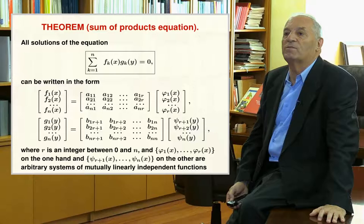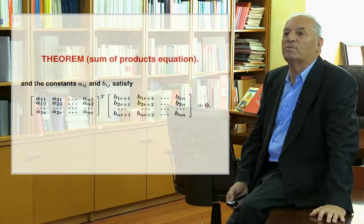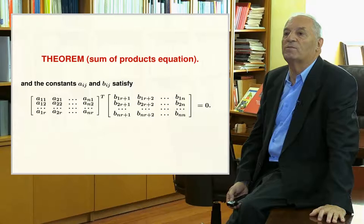Do not be afraid, because we will explain next how this can be done with the two examples following. The reader should understand this theorem before continuing. In order for these sets of functions f and g to satisfy the functional equation, the intermediate matrices must satisfy the condition that the product of the first intermediate matrix transposed by the second intermediate matrix must be the zero matrix.